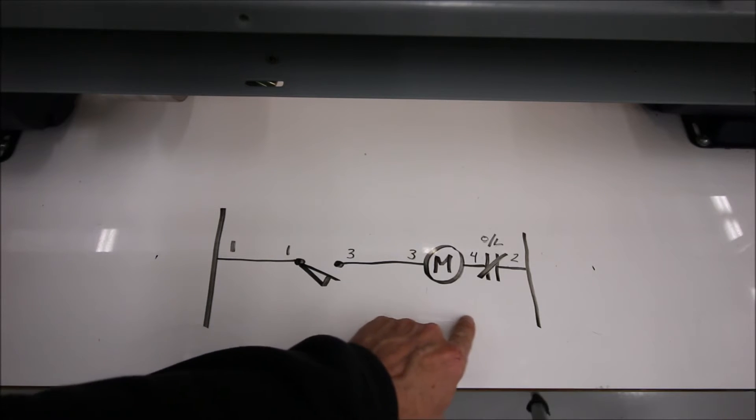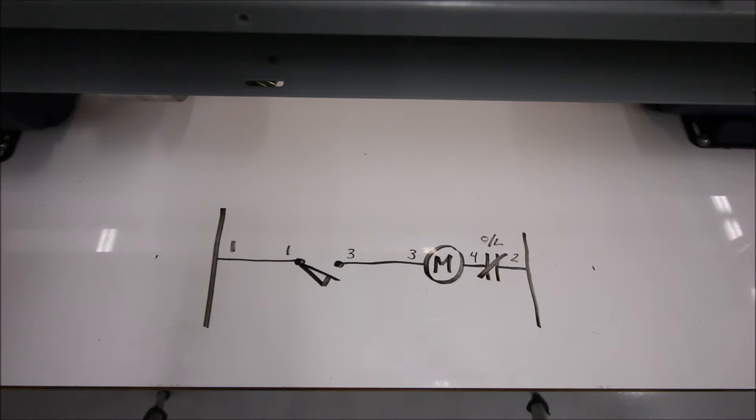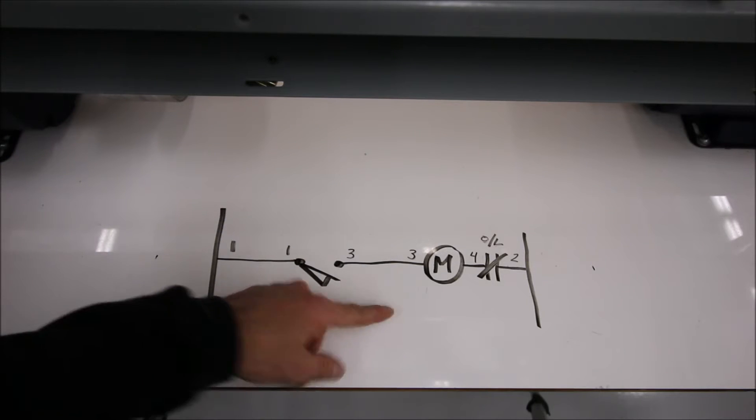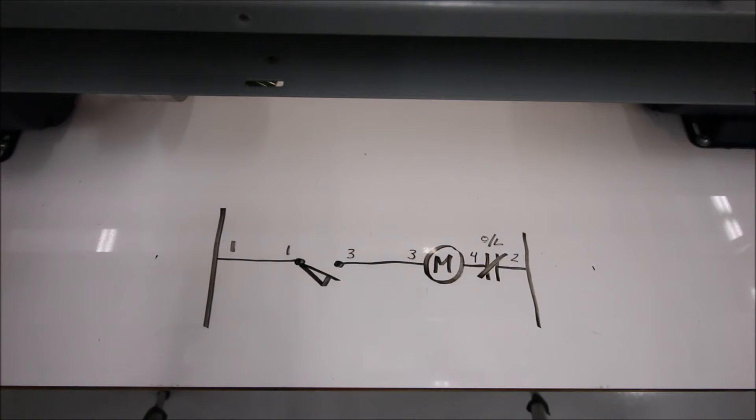Now this one is going to provide two-wire control in that when I close this switch, the motor is going to turn on. When I open that switch, then the motor is going to turn off. There will be no way to maintain that contactor being on. Let's take a look at how it's wired.